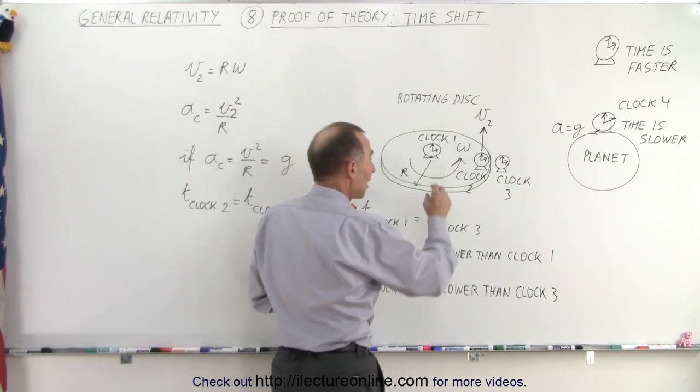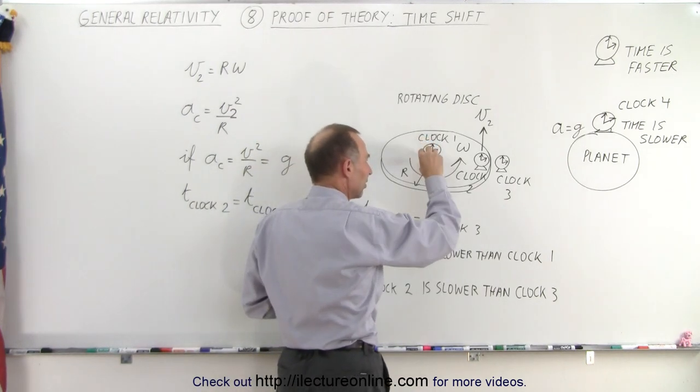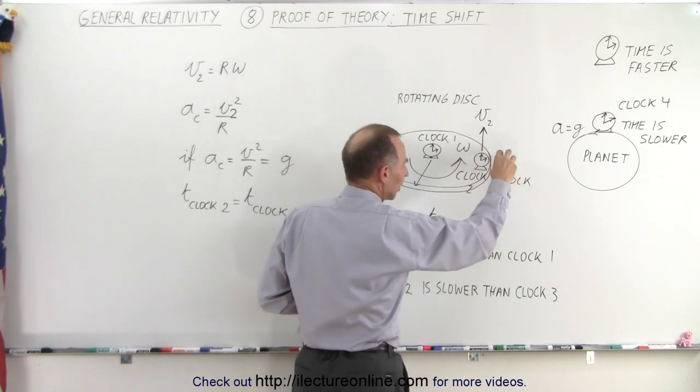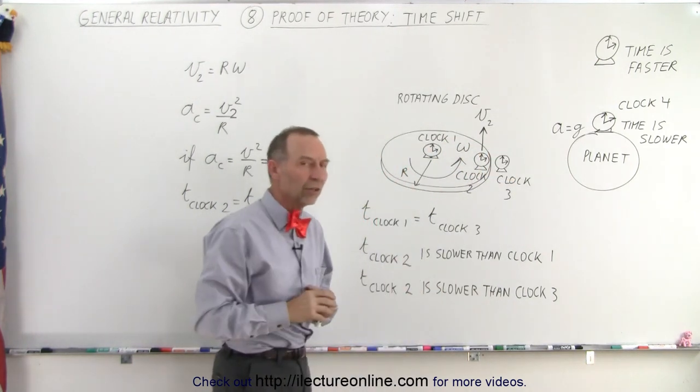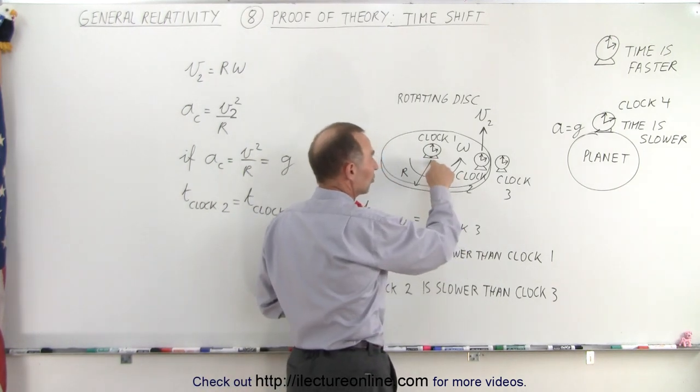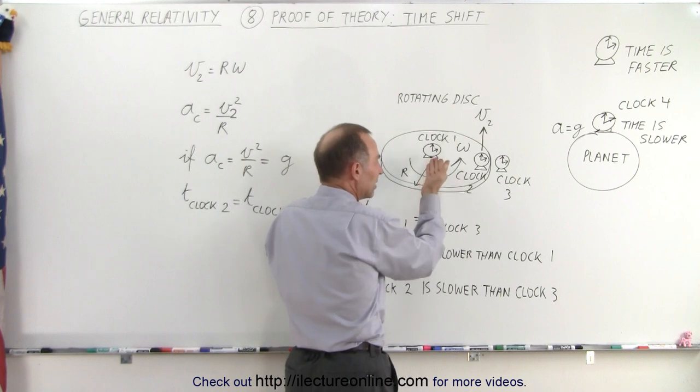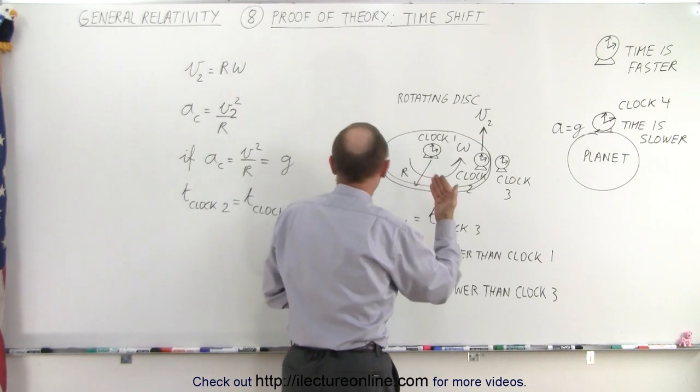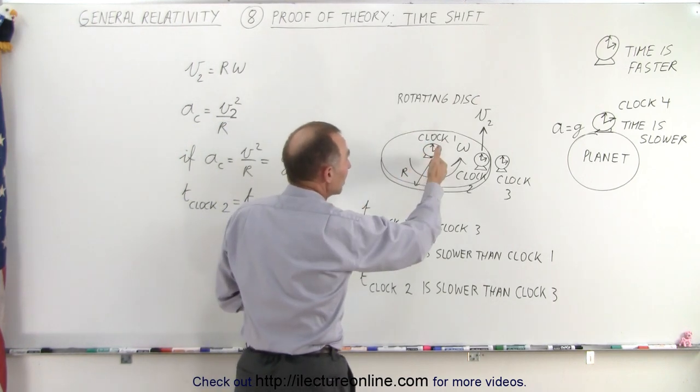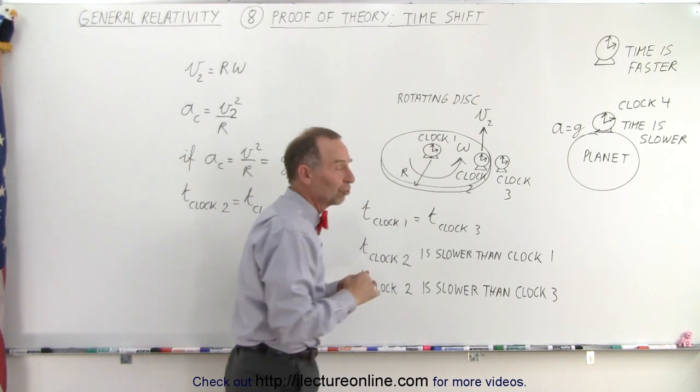So let's say we have three clocks. We have a clock that is positioned right at the center of the disk. We have a clock that's positioned at the edge of the disk, and we have a clock that's positioned right beyond the disk. And therefore, you can see that there's no artificial gravity caused on this clock right here, because there's no radius, and the centripetal acceleration is equal to v squared over r, and so there's no v, there's no radius, there's no artificial gravity.